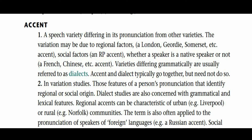Now let's talk about the accent definition given in the Cambridge Encyclopedia of Linguistics. This encyclopedia has documented five different definitions of the word accent. The first is: a speech variety differing in its pronunciation from other varieties. The variation may be due to regional factors. It is similar to the Longman Dictionary definition that an accent is the way a language is spoken in an area — for example, Americans speak in an American accent and British in a British accent.